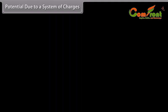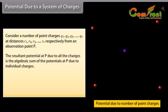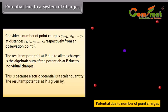Potential due to a system of charges. Consider the point charges Q1, Q2, Q3 and so on till Qn at distances R1, R2, R3 and so on till Rn respectively from a point of observation P. The resultant potential at P due to all charges is the algebraic sum of the potentials at P due to individual charges. This is because electric potential is a scalar quantity. The resultant potential at P is given by V equals V1 plus V2 plus V3 and so on till Vn.